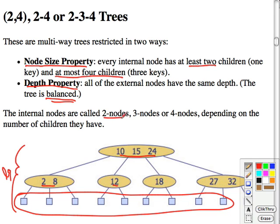So we're going to call these two nodes, three nodes, or four nodes, depending on how many children they have. If it has one key, it's a two node. If it has two keys, it's a three node. And three keys, four node.